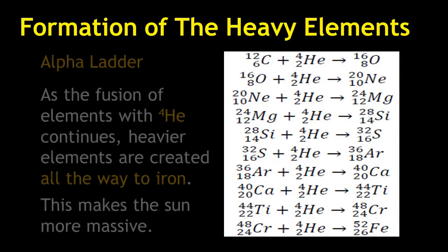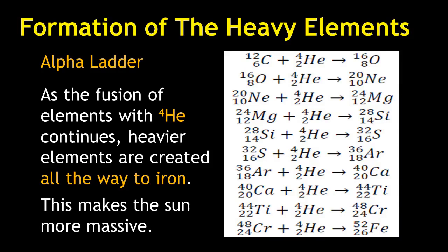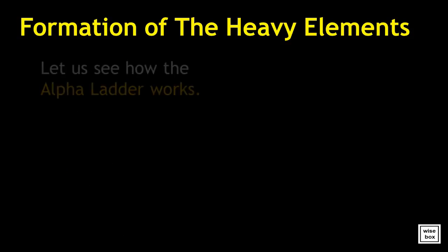In the alpha ladder, the fusion of elements with alpha particles, or helium-4, continues. Heavier elements are then created all the way to iron. This makes the sun more massive. Let us watch and see how the alpha ladder process works.